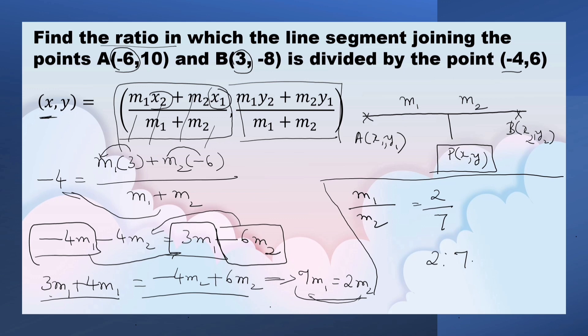So, the point minus 4, 6 divides the line segment internally in the ratio 2 is to 7. If we substitute for Y, we have to get the same value, means 2 is to 7. Now, let us check.